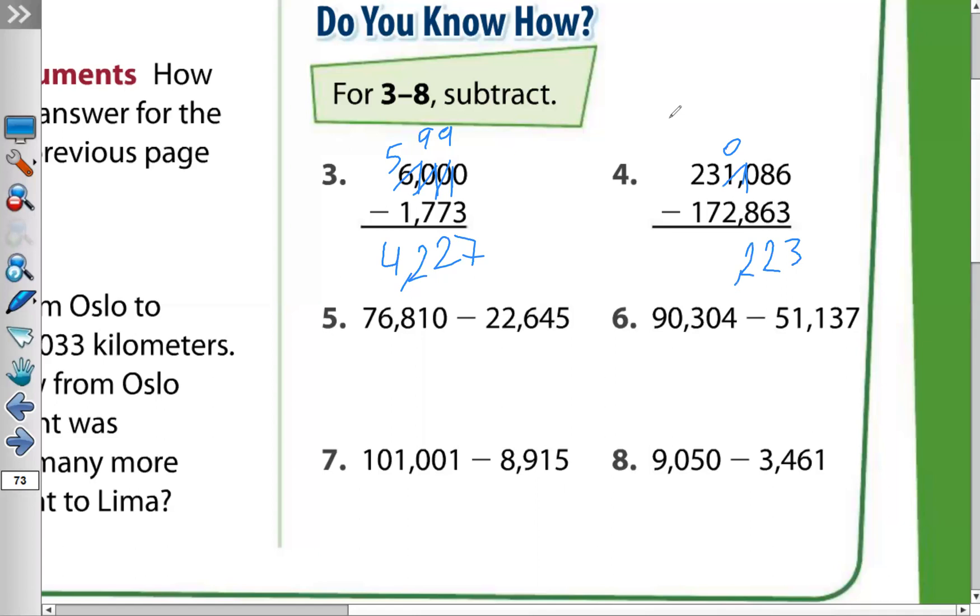Now 0 minus 8, I can't do it. I'll take one from the 3. 3 will be 2. This 0 will be 10. I put the 1 beside the 0. It will be 10. 10 minus 2 equals 8.